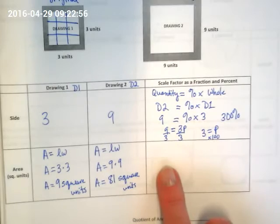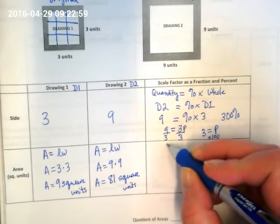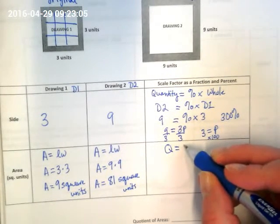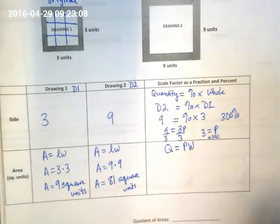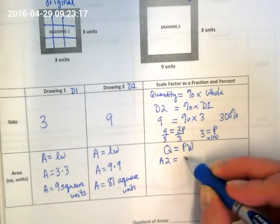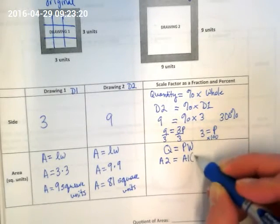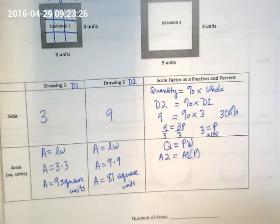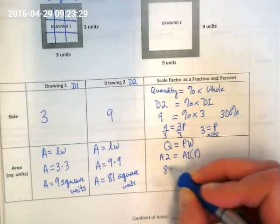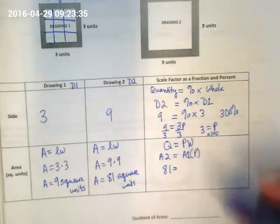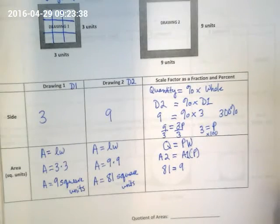So let's try it down here for the area. I'm going to now use some shorthand. Quantity is equal to Q times the percent and the whole. And in this case, I'm using the area of 2 is equal to the area of 1 times the percent. That's not an L, that's a one. That means I have 81 is equal to, what was the area of the first drawing? Nine.